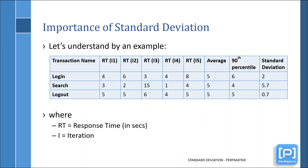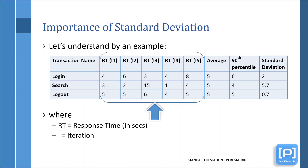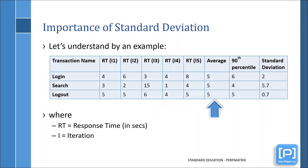Now let's try to understand standard deviation by a simple example. Please have a look at the table. Here you can see the result of a test which has three transactions: login, search, and logout. The test was executed for 5 iterations. The iteration-wise response time of each transaction is in the 2nd, 3rd, 4th, 5th, and 6th columns. The 7th column has average response time, the 8th column has 90th percentile values, and the 9th column has standard deviation values for each transaction.